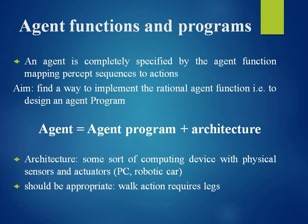The program we choose should be appropriate for the architecture. If the program recommends the action 'walk', the architecture must have legs for walking. The architecture might be an ordinary PC or a robotic car with onboard computers, cameras, and other sensors. The architecture makes percepts from sensors available to the program, runs the program, and feeds the program's action choices to the actuators.